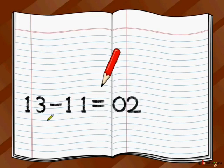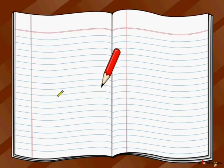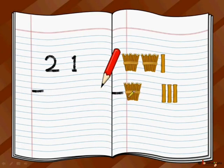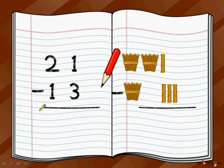Next, subtraction with regrouping. We have 2 bundles of sticks which is 2 tens and 1, so the number is 21. And 1 bundle of sticks and 3, so it is 13. So it is 21 minus 13.